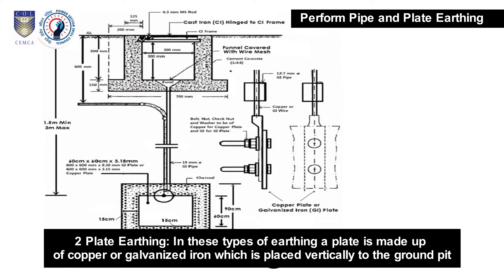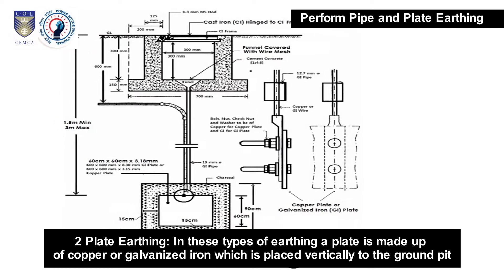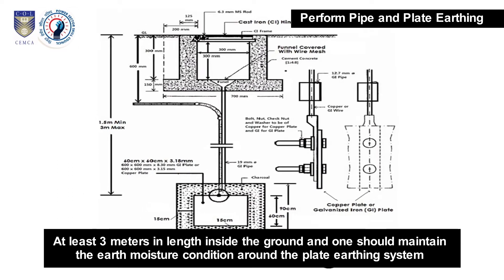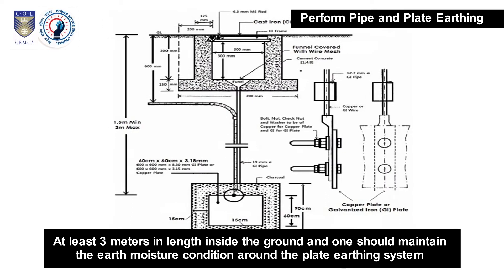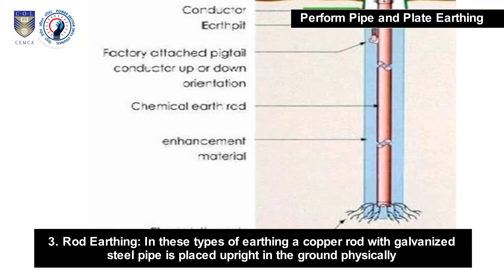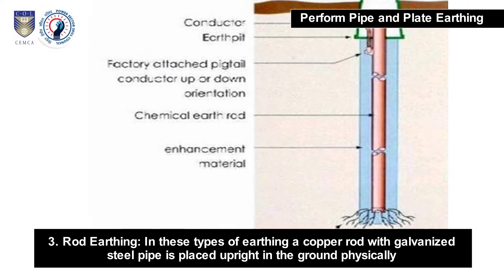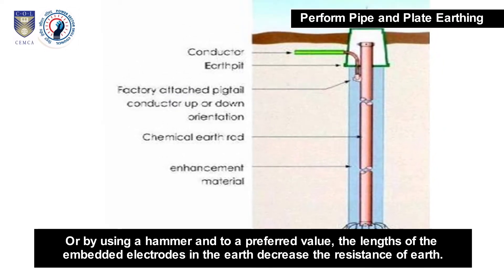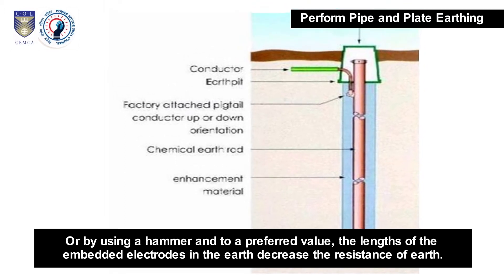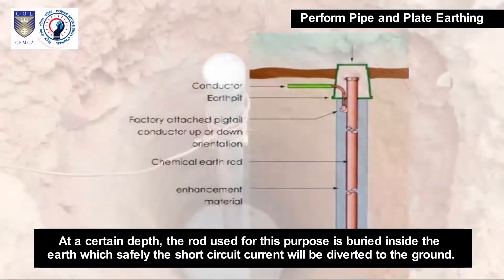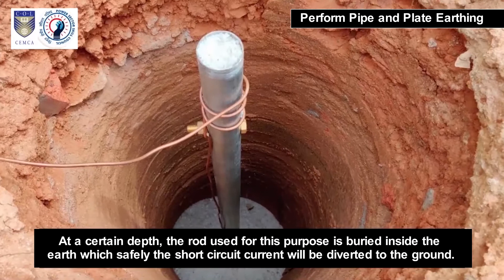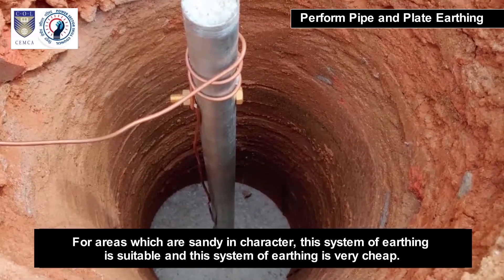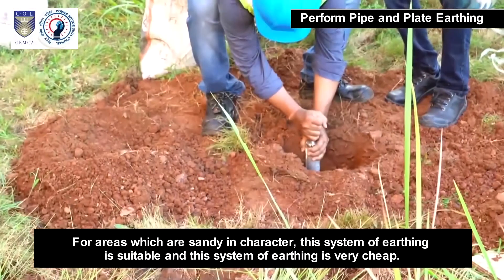Second, plate earthing: a plate made of copper or galvanized iron is placed vertically in a ground pit at least 3 meters deep, and moisture around the plate must be maintained for better electrical grounding. Third, rod earthing: a copper rod with galvanized steel pipe is placed upright in the ground physically or using a hammer. The length of the embedded electrodes decreases earth resistance at a certain depth. The rod safely diverts short circuit current to the ground. For sandy areas, this system of earthing is suitable and very cheap.